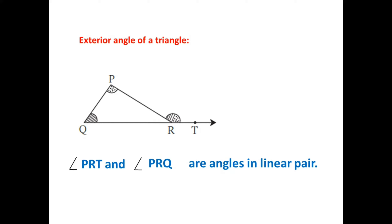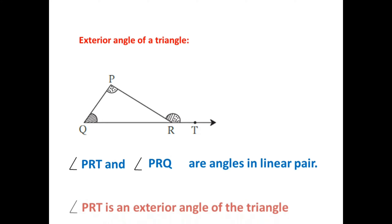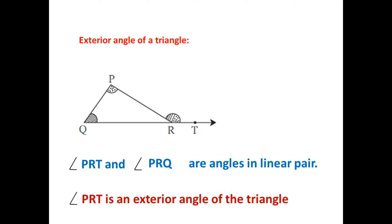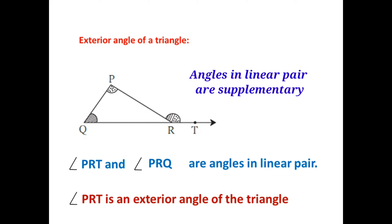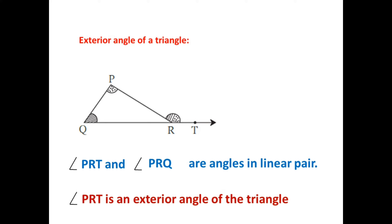These two are angles in a linear pair. If there is an angle making a linear pair with an interior angle of a triangle, then we say that angle is an exterior angle of the triangle.